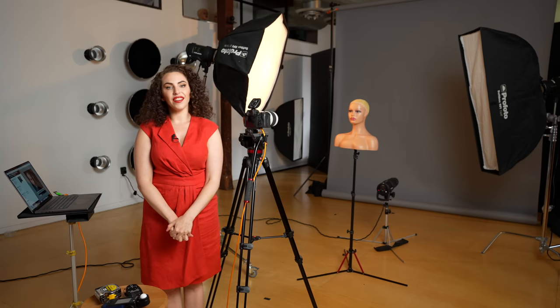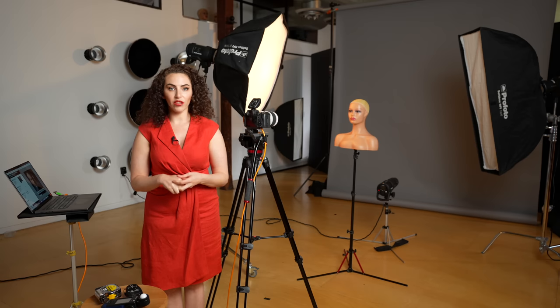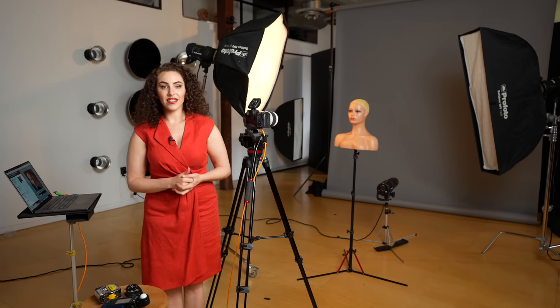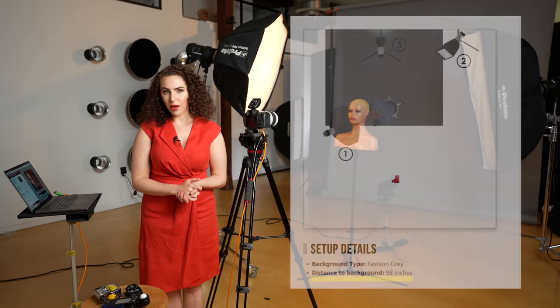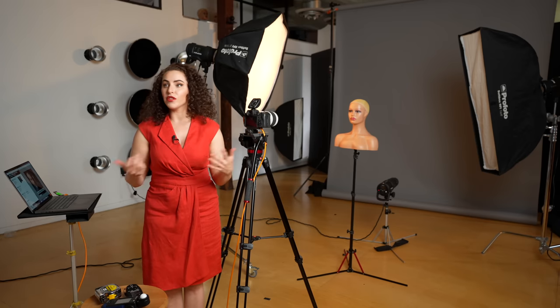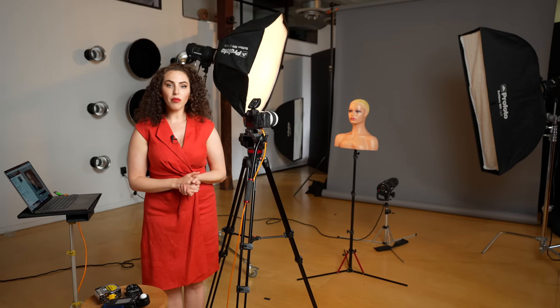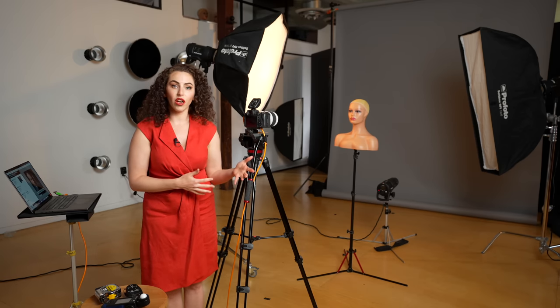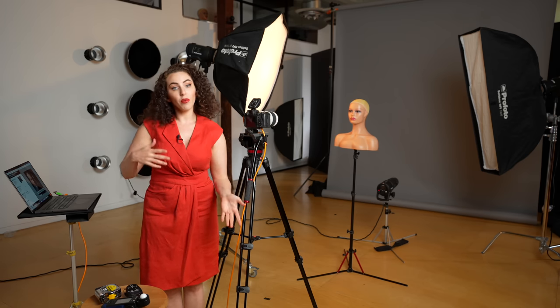Let's begin at the very beginning with one of the simplest measurements — the distance of the subject to the background. In this instance, I have a distance of 98 inches from my subject to the background. That's what it says in the guide. But maybe you don't have that much space. That's fine — you can definitely move the subject closer, just know that there may be consequences. For example, if you have a big light and you move the subject and that light closer to the background, more of that light will spill on the background and change what the background looks like. Every change you make will have some sort of visual consequence, for better or for worse.